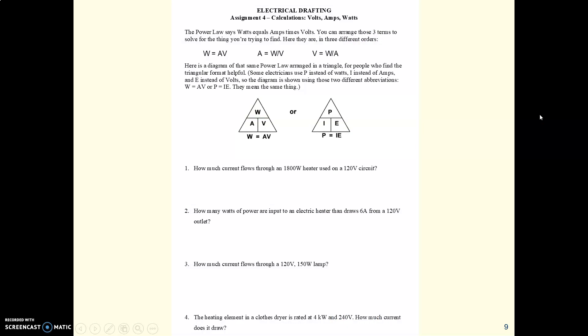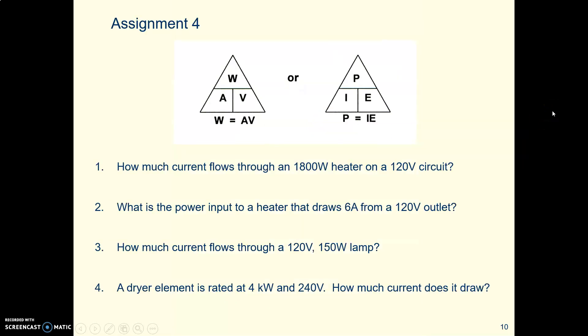Here's our next assignment. This is assignment four, where we're going to figure out, we have four problems, and we're going to figure out some things. And I have put this triangle diagram in here, and I put it in here in both versions, the watts, amps, volts that we're going to use. But I also put the PIE in here in case that's what you're familiar with, or in case you want to be familiar with it. So here are our four questions in that assignment, and let's go through these together one at a time.